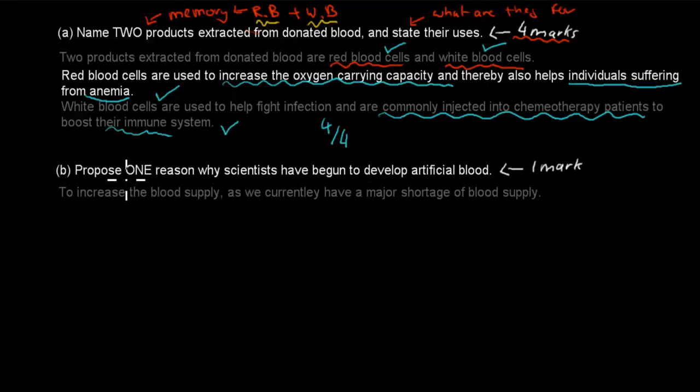And there were different reasons. So for example, blood supply is short. That's the one I'll be talking about. Blood supply, increased blood supply, compatibility issues. So for example, some people can't accept anything but O minus.